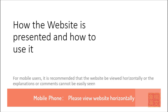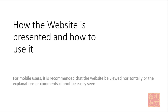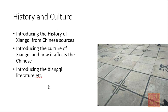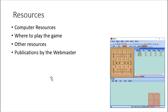The website is presented mainly in three major sections. The first covers the technical aspects — how to play the game, the basic kills, etc. There is also a section introducing the history and culture of Xiangqi. Finally, there is another section with many resources to help the person interested in Xiangqi to learn more. We will go to the website and I will show you where to look for things you might be interested in.